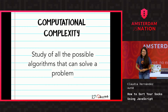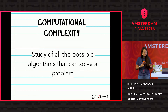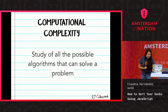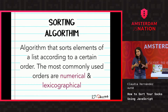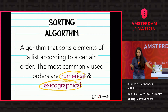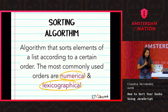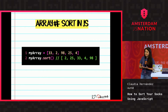First of all, what is computational complexity? It's just the study of all the possible algorithms that can solve a problem. But this is a sorting talk — so what is a sorting algorithm? A sorting algorithm is an algorithm that sorts elements in a certain order. The most commonly used orders are numerical and lexicographical. Pay attention to those two. And since we're at a JavaScript conference, let's talk about the JavaScript native sort function.